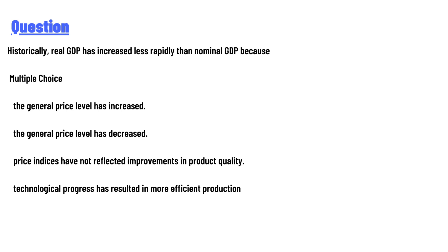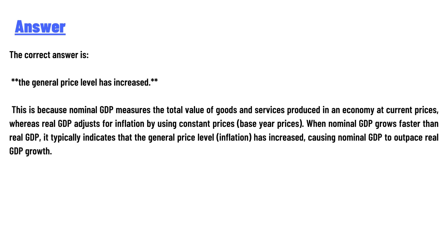...multiple choice: (A) the general price level has increased, (B) the general price level has decreased, (C) price indices have not reflected improvement in product quality, (D) technological progress has resulted in more efficient production. Answer the question.